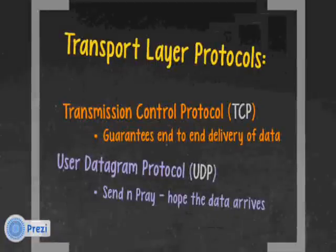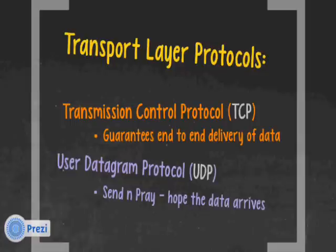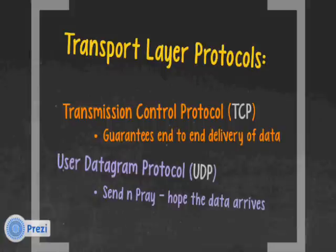Transport layer protocols include Transmission Control Protocol, TCP, which guarantees end-to-end delivery of data. It does a three-way handshake to find out if the destination is present. It requires acknowledgments for data that's sent out, checks for errors during transmission, and if there are errors it will ask you to resend. It also breaks data up into segments, gives them sequence numbers, and puts data back in proper order if it arrives out of sequence.